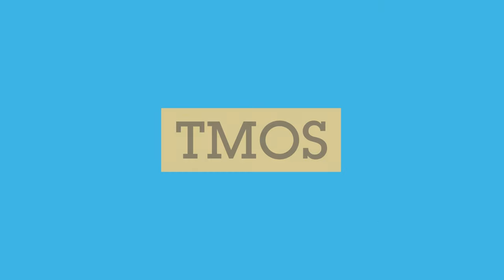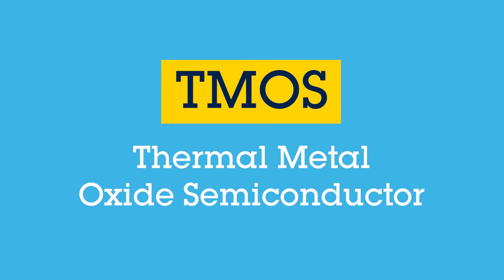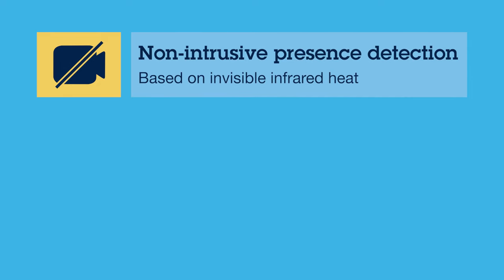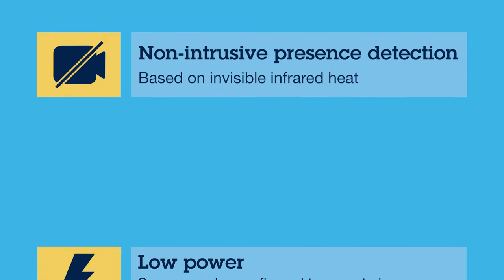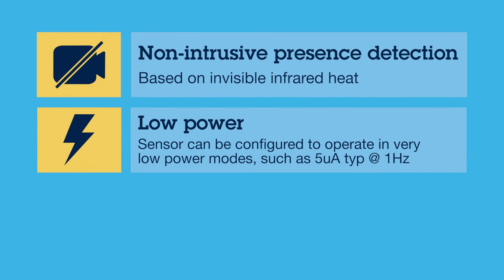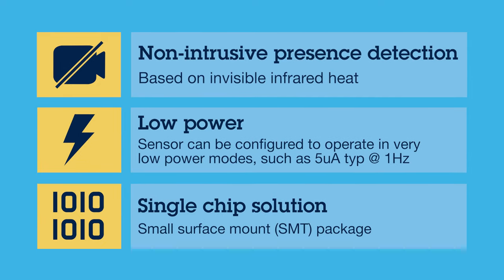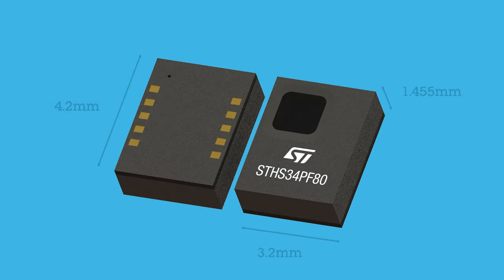ST's IR sensor is based on TMOS technology — that stands for Thermal Metal Oxide Semiconductor — which is fabricated in standard SOI CMOS and MEMS processing technologies to achieve high performance and flexibility, all in a small package form factor. Its part number is STHS34PF80.